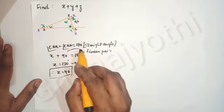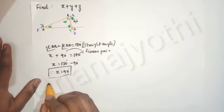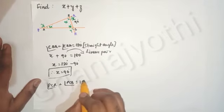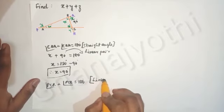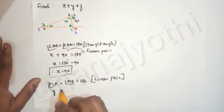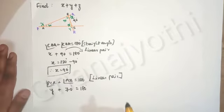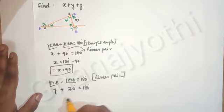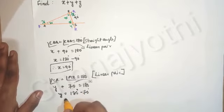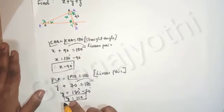Now let us find y. Angle PCR plus angle PCB is equal to 180 degrees. So y plus angle PCB equals 180 degrees. Here y plus 70 degrees is equal to 180 degrees. Transposing 70 degrees to the right hand side, y is equal to 180 minus 70 degrees, which is equal to 110 degrees. So we found the value of y is equal to 110 degrees.